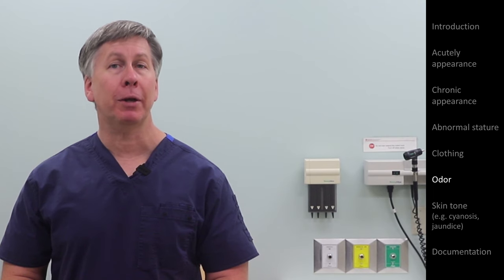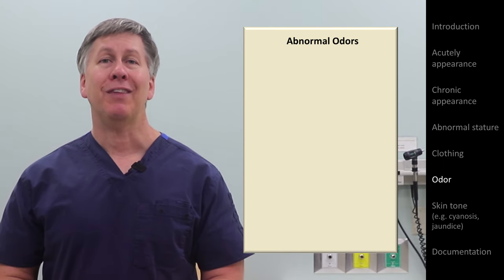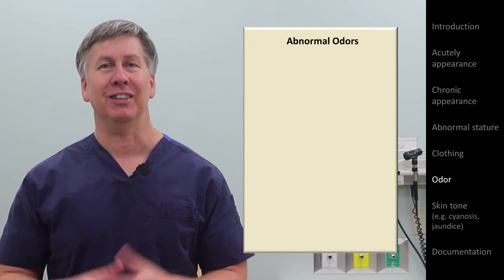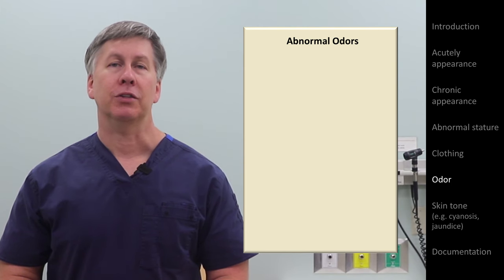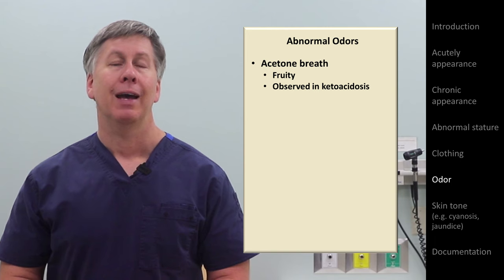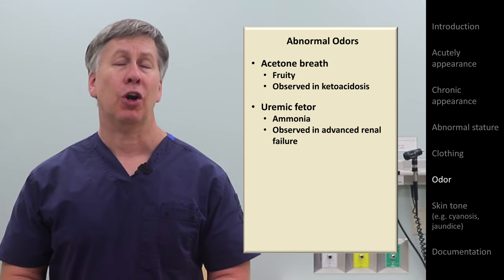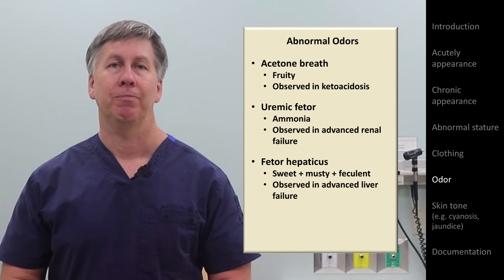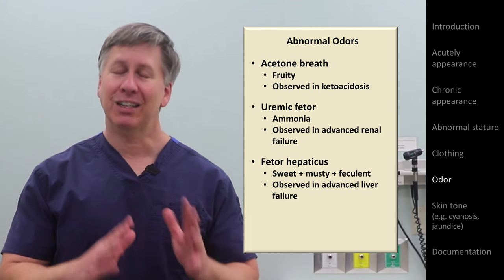Another physical characteristic under general appearance is an unusual odor. That doesn't refer to plain old body odor — particularly in the era of open notes when patients can access their records directly, I would not include that in formal documentation. However, there are far less common but more specific odors you definitely should document. The three classic ones are: the fruity breath of ketoacidosis caused by acetone production; an ammonia or urine-like odor on the breath in uremia from advanced kidney failure called uremic fetor; and a distinctive smell called fetor hepaticus in advanced liver failure, described as sweet but musty and feculent at the same time.